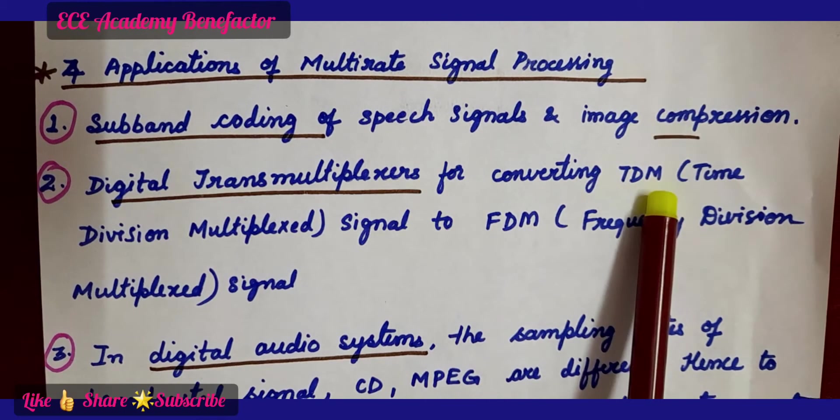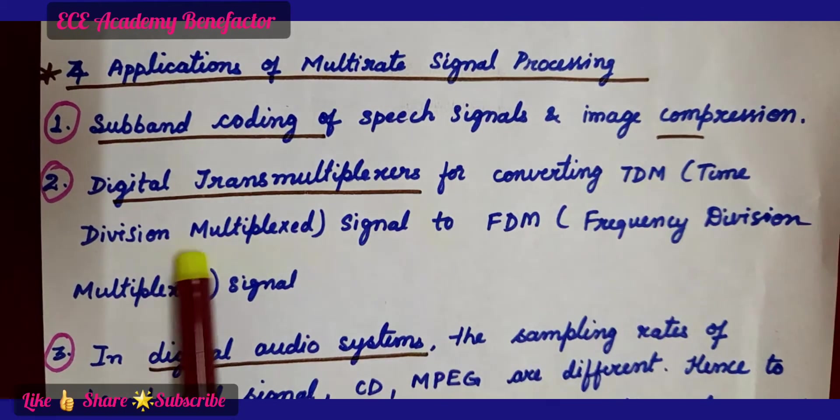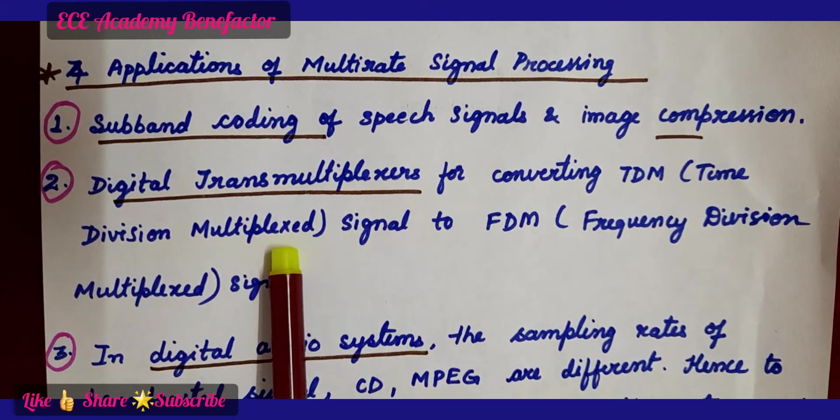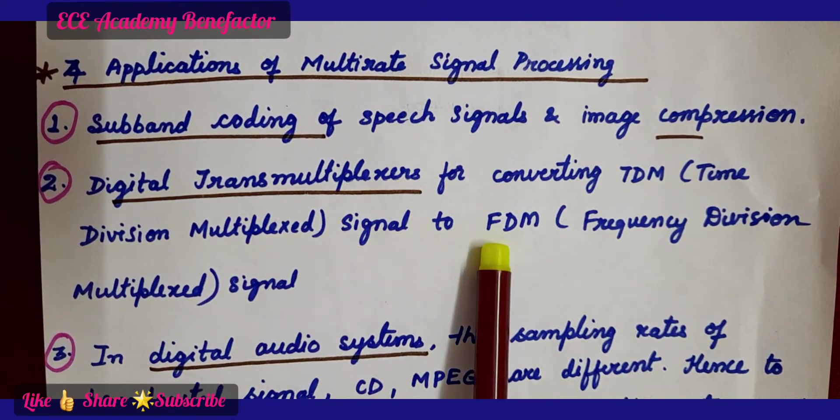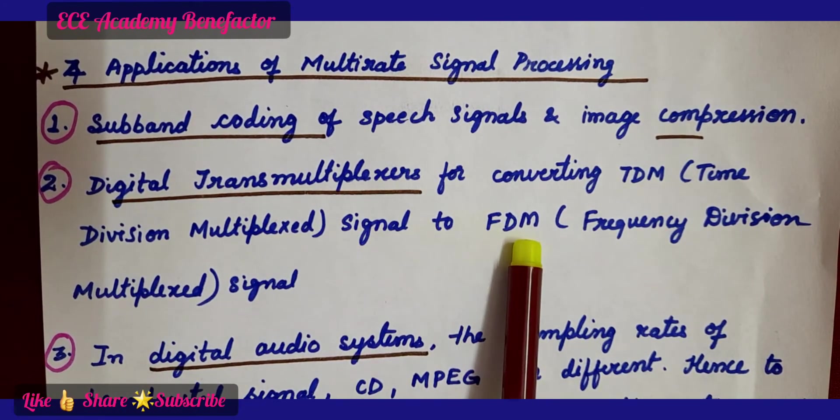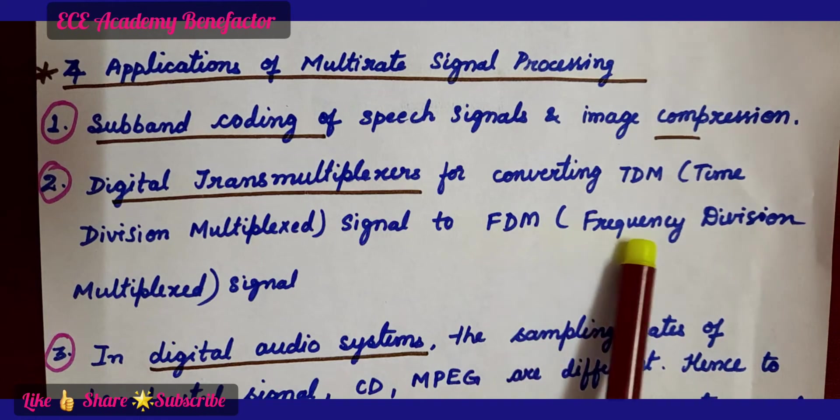TDM is a time division multiplexed signal and FDM is a frequency division multiplexed signal.